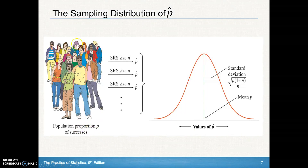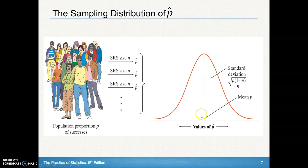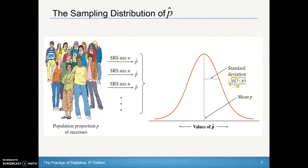Out in the world there's some population proportion of successes. People take simple random samples and each gets a p-hat. If you take and plot all of these p-hats into a sampling distribution, that mean should be an unbiased estimator — the mean of all the p-hats should equal p. The standard deviation would be the square root of p times q, or p times (1 minus p), all over n.